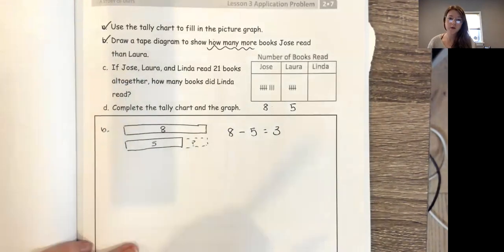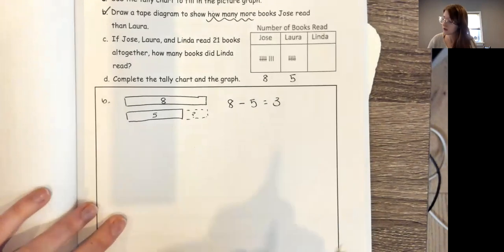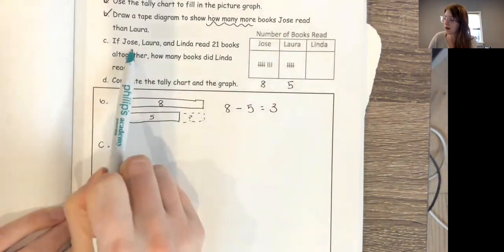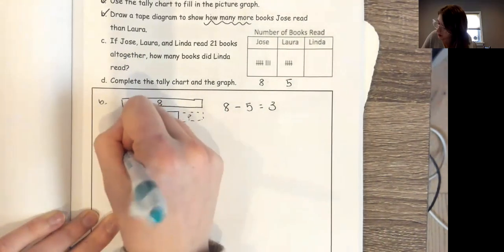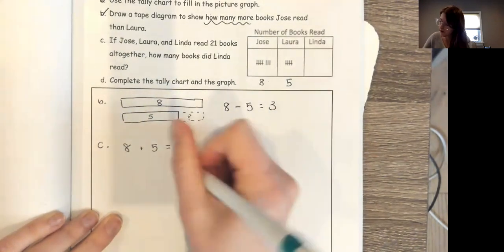Now C says if Jose, Laura, and Linda read 21 books all together, how many books did Linda read? So what I need to do is first I need to figure out how many I know that Jose and Laura already read together. So I know that Jose read eight, Laura read five. So altogether that gives me 13.